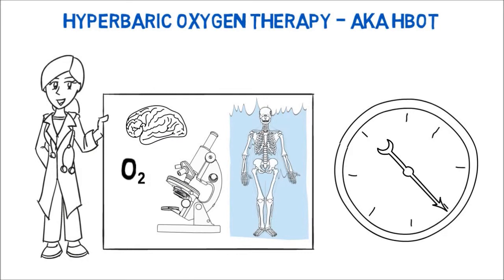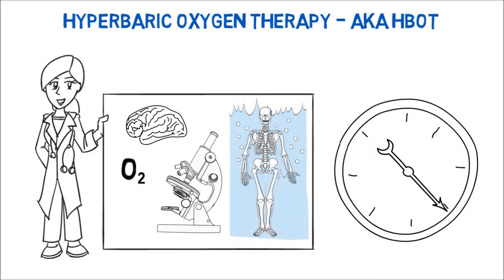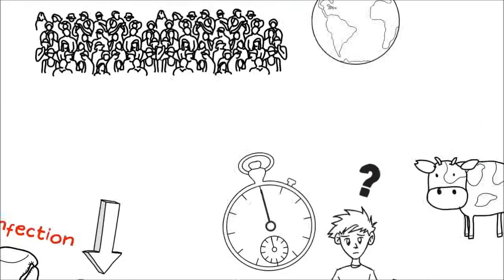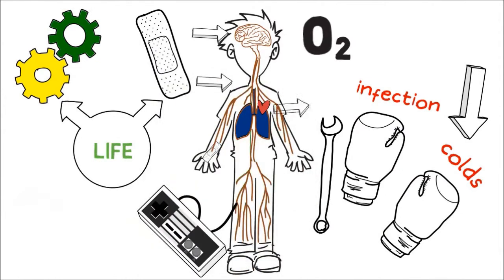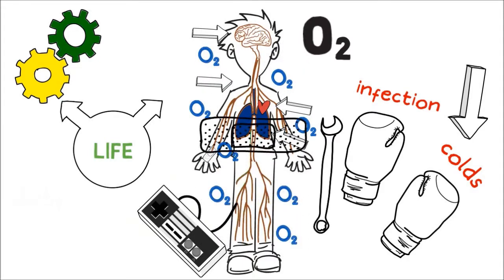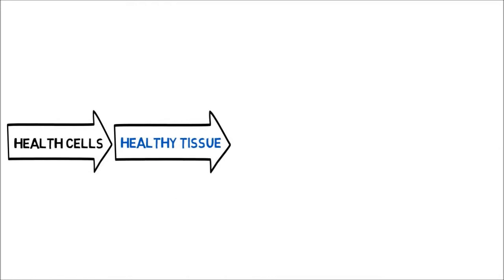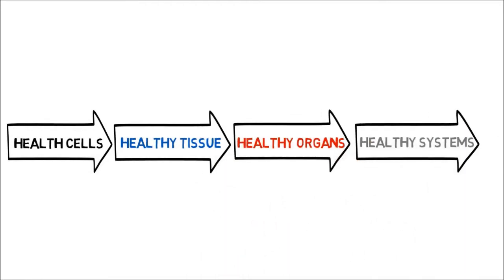This super saturated oxygen-rich fluid bathes and rejuvenates every single cell of your body. This means that all the fluid that surrounds your brain, spinal cord, heart, lungs, plasma, and joints is super oxygenated, healing and rejuvenating every cell of your body. Healthy cells become healthy tissue, healthy tissue becomes healthy organs, healthy organs become healthy systems, and healthy systems become a healthier you.